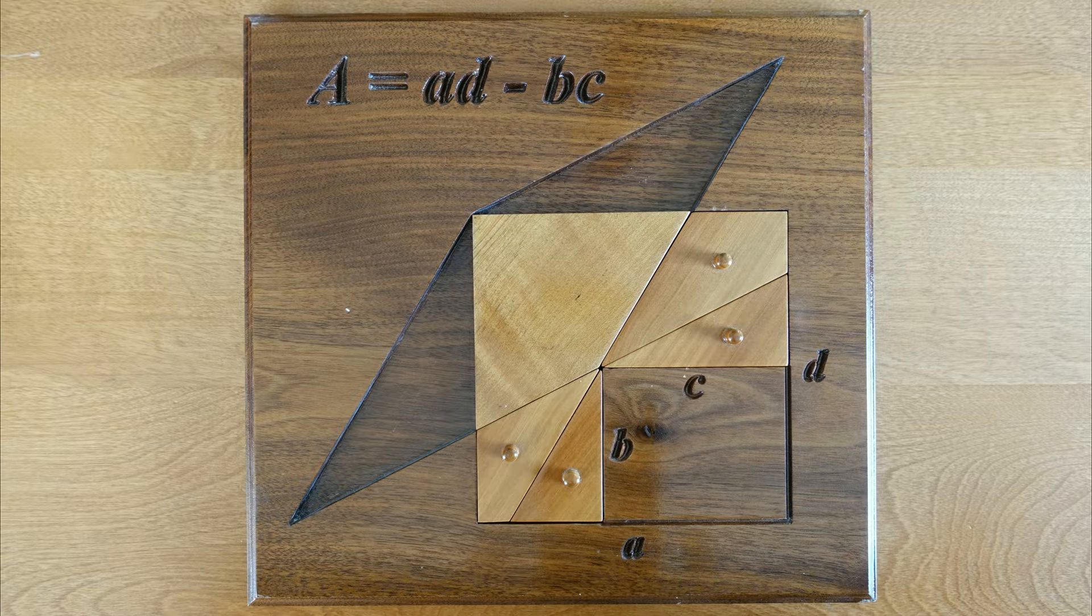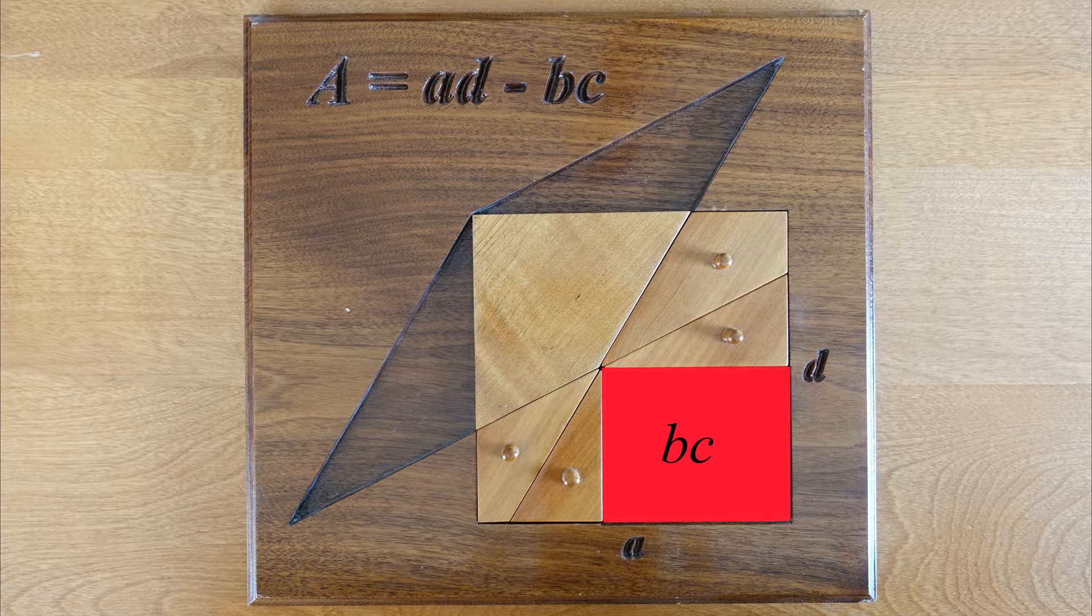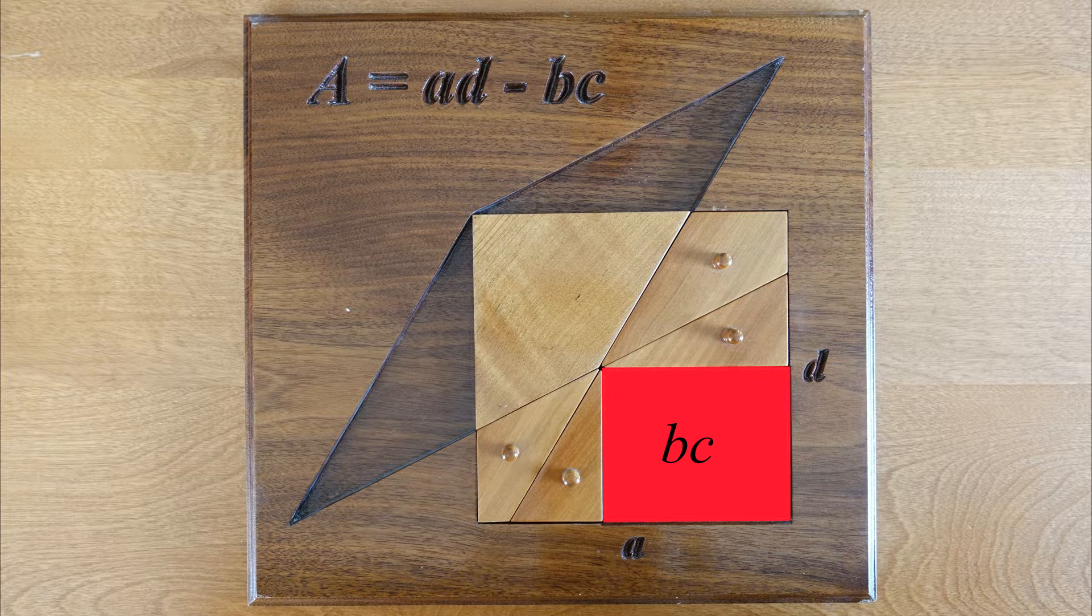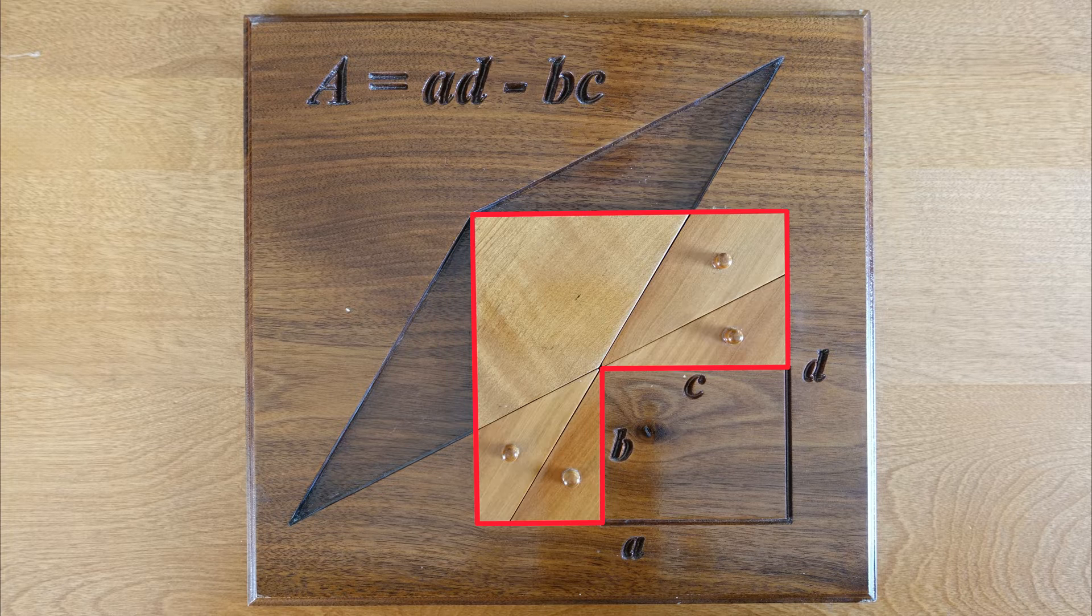The larger rectangle has area A times D. The smaller rectangle has area B times C. The difference is AD minus BC, the determinant, which is the same as the area of the parallelogram.